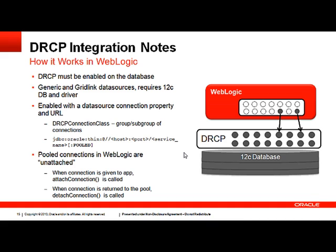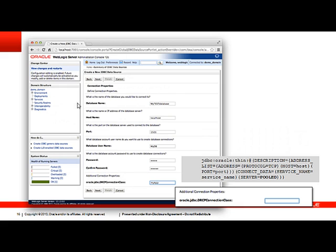How does it work in WebLogic? DRCP must be enabled on the database. Generic and grid-linked data sources need to be configured, and it does require database and driver 12c. You enable DRCP with a data source connection property and URL. The DRCP connection class allows you to specify a group or subgroup of sessions, normally used to obtain statistics of session usage. Pooled connections in WebLogic are unattached. When the connection is given to the application, an attached connection is called. When the connection is returned to the pool, a detached connection is called. This is how a configuration of DRCP looks in the WebLogic Server console — you would specify a URL and an Oracle JDBC DRCP connection class.